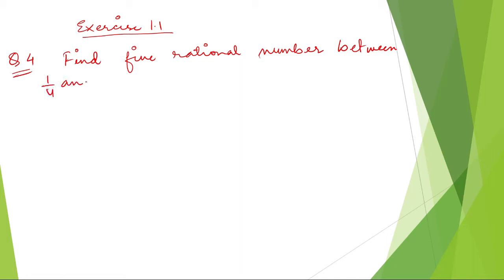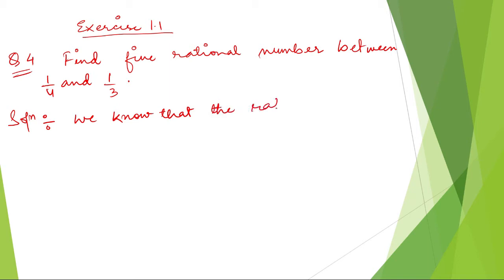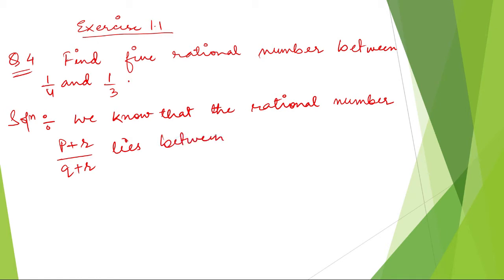Solution. Find 5 rational numbers between 1 by 4 and 1 by 3. Like the previous question, we noted that the rational number (p + r) / (q + s) lies between p by q and r by s. So we can write 1 by 4 is less than 1 by 3.